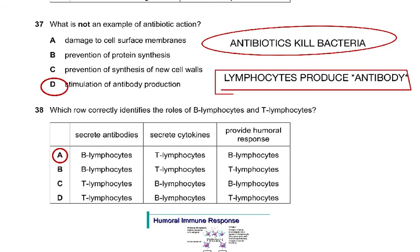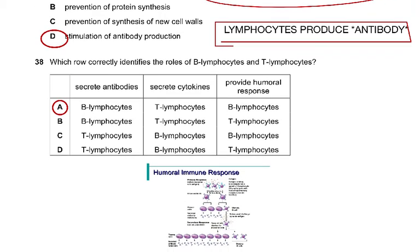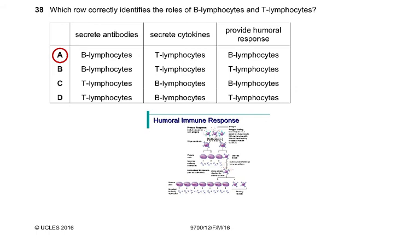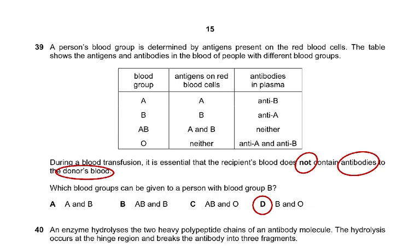Question 38: Which correctly identifies the role of B lymphocytes and T lymphocytes? The humoral immune response and the cell-mediated immune response — this topic is no longer in the syllabus, so we won't discuss it in detail. However, the answer was A: B lymphocytes secrete antibodies; T lymphocytes secrete cytokines. The humoral response involves B lymphocytes. This topic has now been removed from the syllabus.